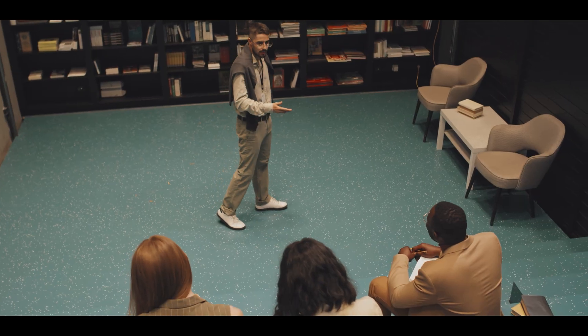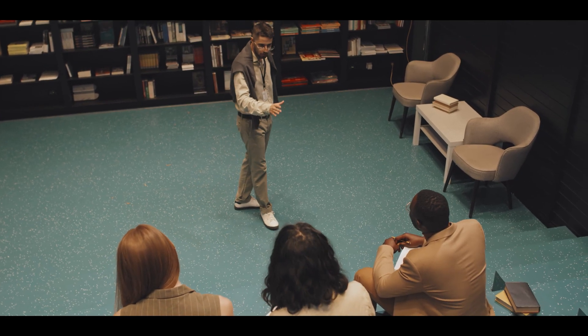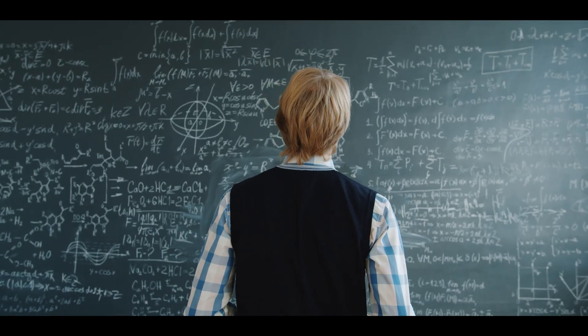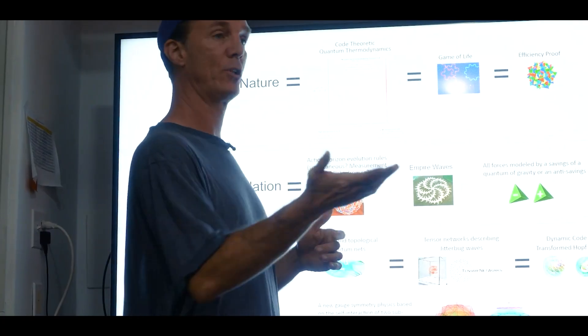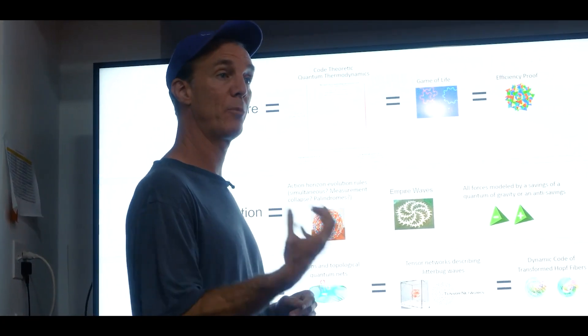Emergence theory is what we call a toy model. That's when a scientist has a conceptual framework for something that is developed enough to call it a model, but not rigorous enough to have physical realism and equations. So emergence theory is a toy model that we work on here at Quantum Gravity Research that fits within the framework of the self-simulation hypothesis interpretation of quantum mechanics.